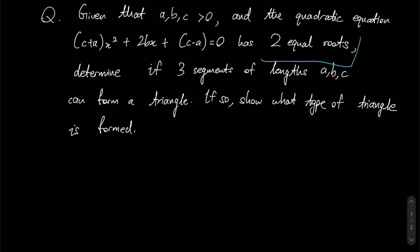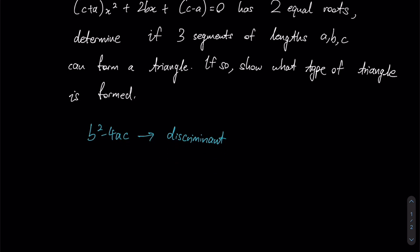First, let us observe the criteria here, which is the fact that I need to have two equal roots from this quadratic equation. To show whether this equation has two equal roots or not, we're going to make use of this concept called the discriminant, which refers to the expression b² - 4ac.